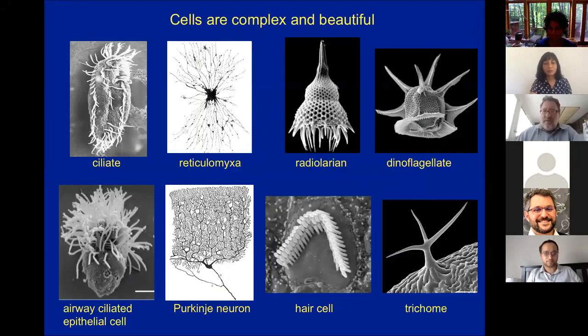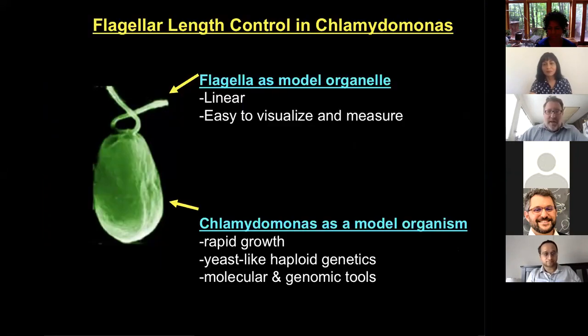So if you look at cells, we think of them sometimes as being amorphous bags of enzymes. But actually, they have very complex and beautiful structures. And so the question is, where does all the structure come from? And at some level, we can break the structure down into the size and shape of individual subcellular structures. We think that a really good structure to ask these kind of questions is the flagellum, because it's a linear structure. So it's easy to visualize and measure. We are studying flagella using Chlamydomonas, which is a unicellular green alga. We use Chlamydomonas because it's very much like yeast. It has a lot of the genetic tractability as yeast, but it has flagella, which yeast doesn't have.